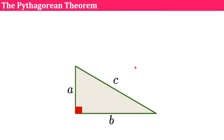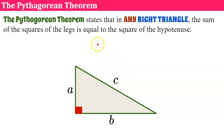Now we're ready to learn about the Pythagorean Theorem. The Pythagorean Theorem states that in any right triangle, the sum of the squares of the legs is equal to the square of the hypotenuse. Sounds like a lot. Here's the formula: a squared plus b squared equals c squared. You've probably heard this a lot.